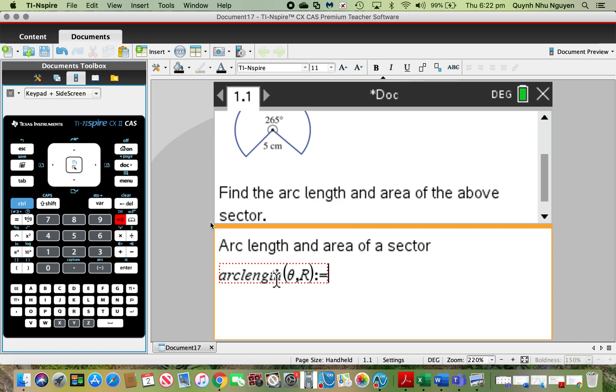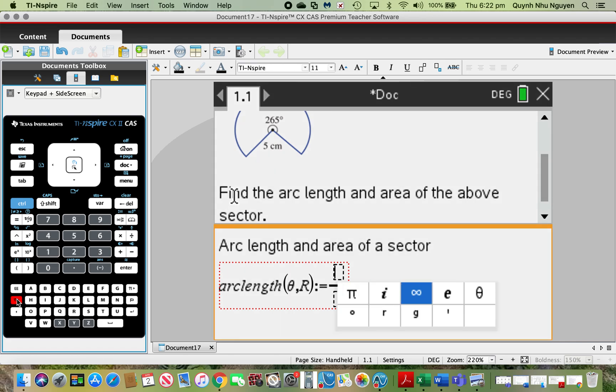Arc length is just a fraction of the full complete circumference of your circle. To get that fraction, you use some angle out of 360 degrees multiplied by the formula for full circumference 2πr. Call out the fraction template by pressing control division, put theta on the numerator, press tab, then 360 degrees on the denominator, right navigation button, multiply by 2πr.